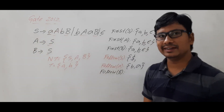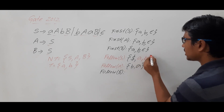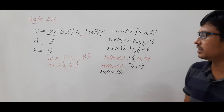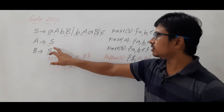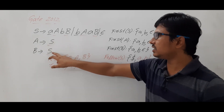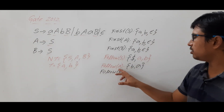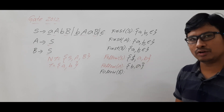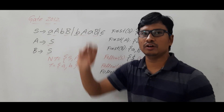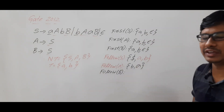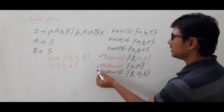So FOLLOW of S is equal to FOLLOW of B. I have already computed FOLLOW of S up to dollar, then FOLLOW of A is {a, b}, and since FOLLOW of S equals FOLLOW of A, I add 'a' and 'b'. So FOLLOW of S is {$, a, b}. And since FOLLOW of B equals FOLLOW of S, FOLLOW of B is also {$, a, b}.